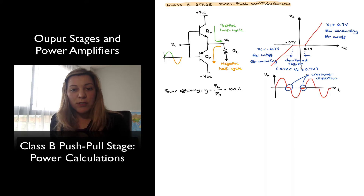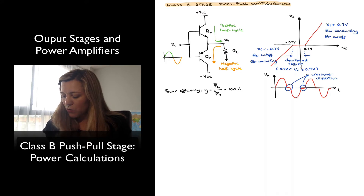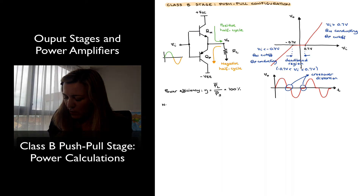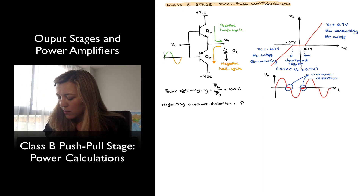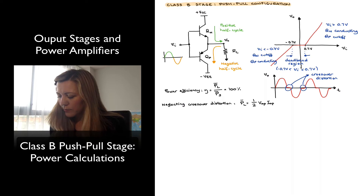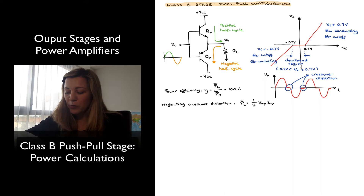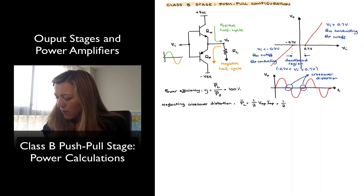Now in this case, since we have a sinusoidal signal, we will need to average those powers over an entire cycle. In terms of the power delivered to the load, if we neglect crossover distortion and assume the signal provided to the load is a perfect sinusoidal signal, we can approximate the power delivered to the load as one half of the peak output voltage times the peak output current, which is VOP divided by RL, giving us one half of VOP squared divided by RL.